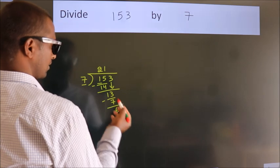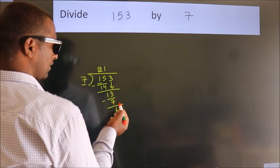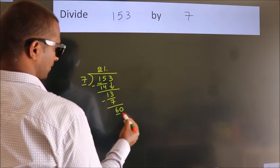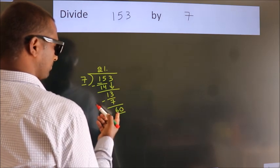After this, no more numbers to bring down. So what we do is, we put a dot and take 0. So 60.